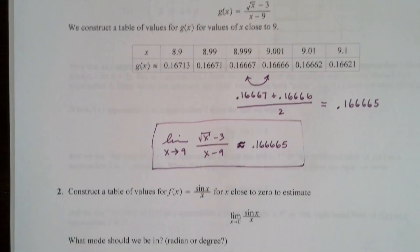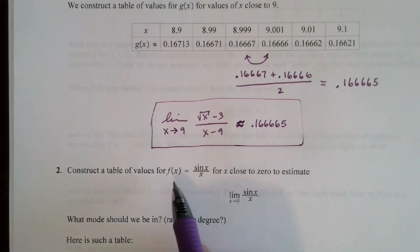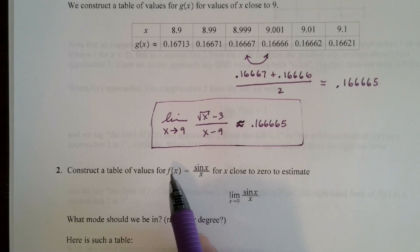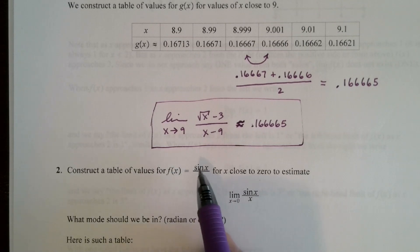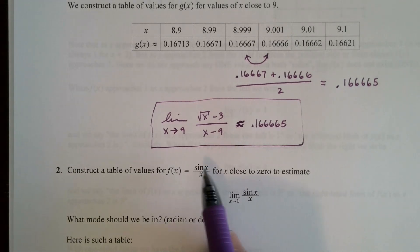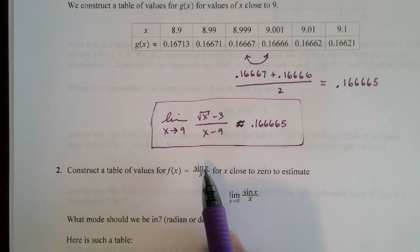Let's look at another example. I want to look at the function sine x over x, and I want to take the limit as x approaches 0. Again, when I try to evaluate this at 0, I'm going to run into problems because dividing by 0 — sine of 0 divided by 0 is not defined. It's actually a form we're going to call indeterminate because sine of 0 is also 0.